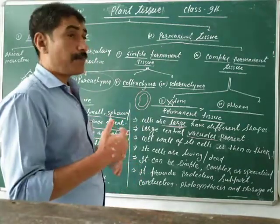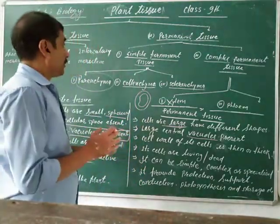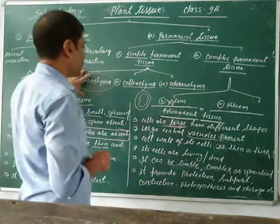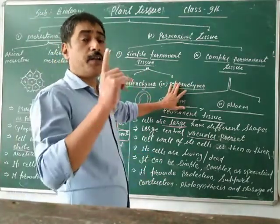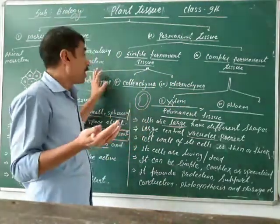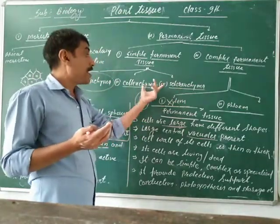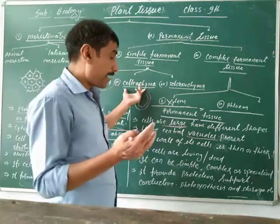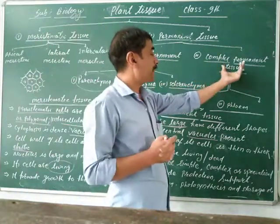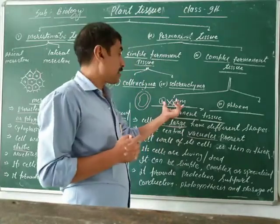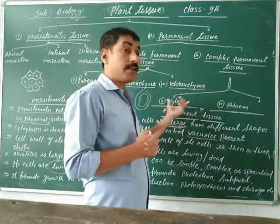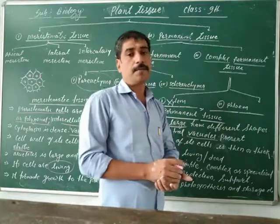For the next part, you will learn about the different types of simple permanent tissue such as parenchyma. These simple permanent tissues are made up of only one type of cell. Parenchyma helps in the storage of food. Collenchyma provides rigidity and strength, helping in support and protection. Complex tissues — xylem and phloem — are known as conduction tissue because they conduct water, minerals, and food throughout the plant parts.